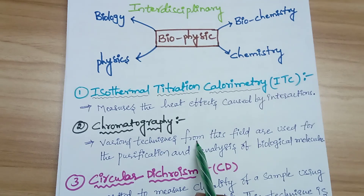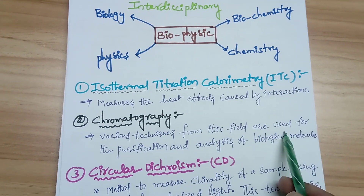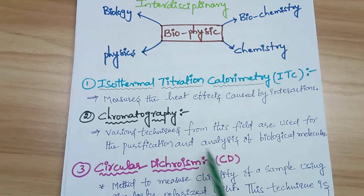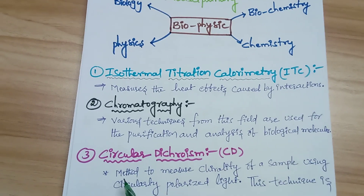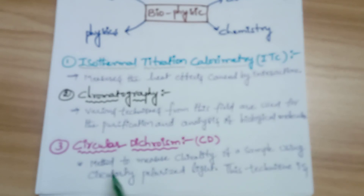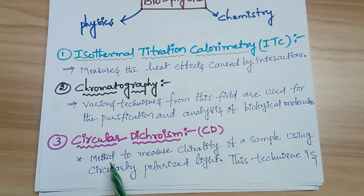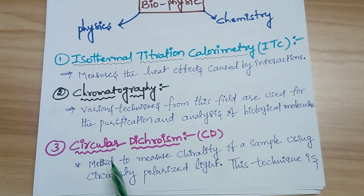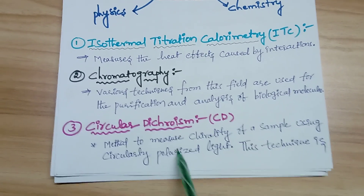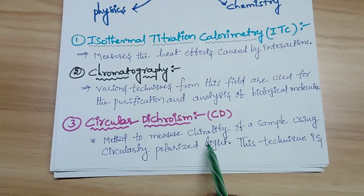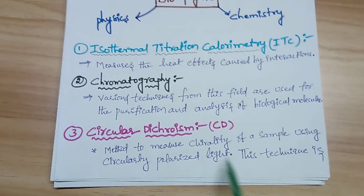The second technique is chromatography. Various techniques from this field are used for the purification and analysis of biological molecules. The third biophysical technique is Circular Dichroism (CD), a method to measure the chirality of your sample using circularly polarized light.